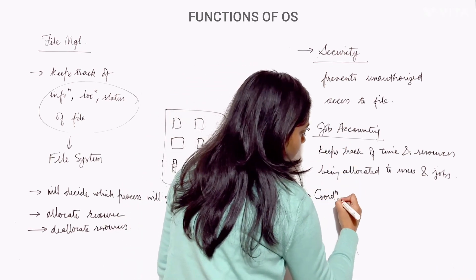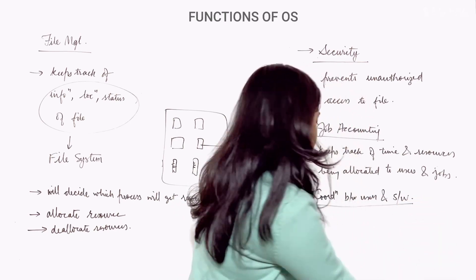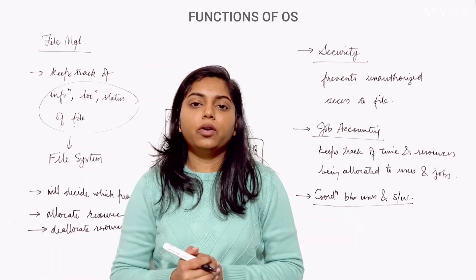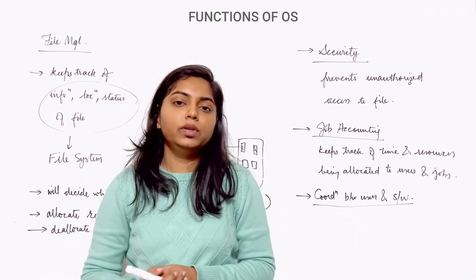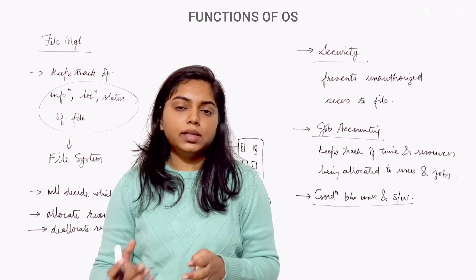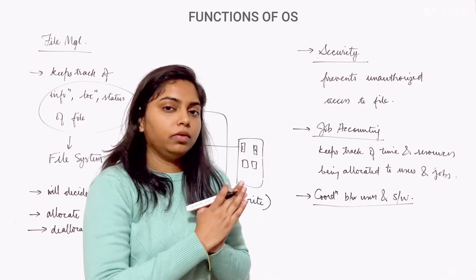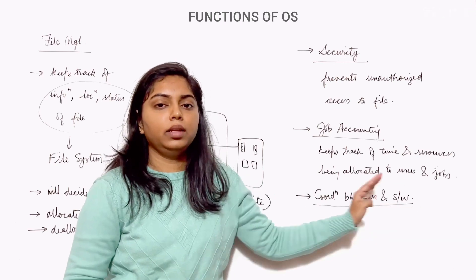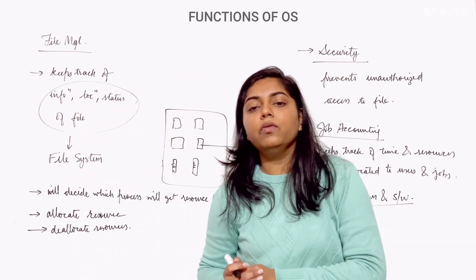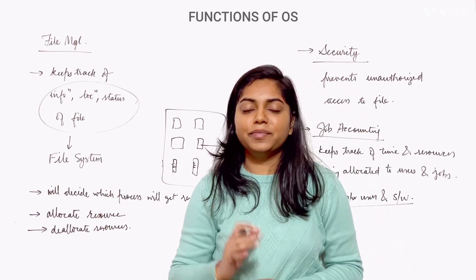Another function is coordination between users and software. OS can provide this coordination by assigning various software tools — such as compilers, interpreters, assemblers, and others — to users of the system. By this way, OS can coordinate between users and software in an efficient manner. These are all the functions of operating system we have discussed. Thanks for watching, see you in the next video.